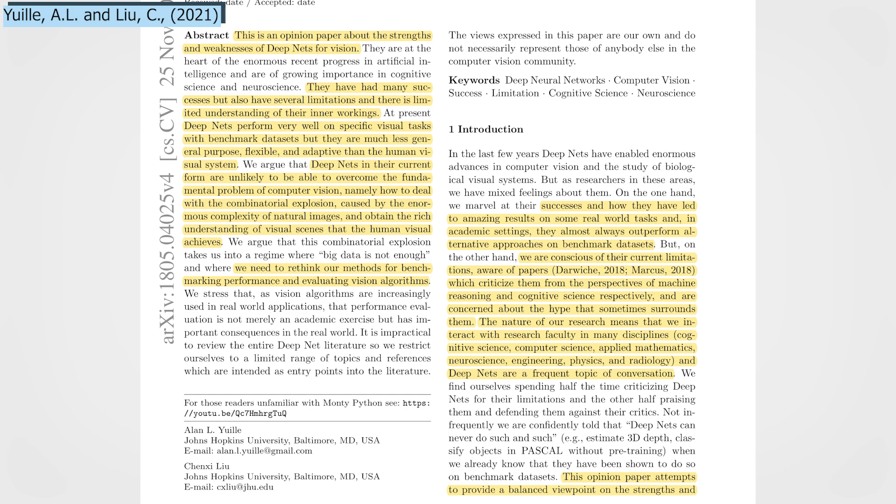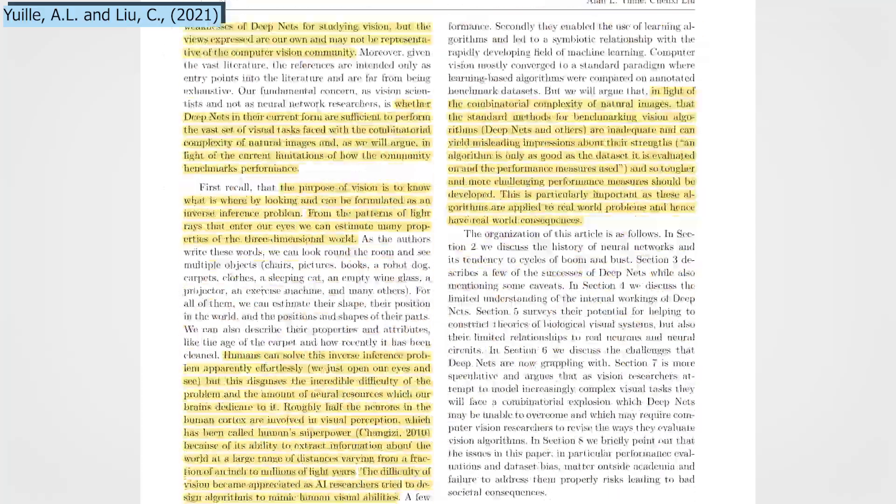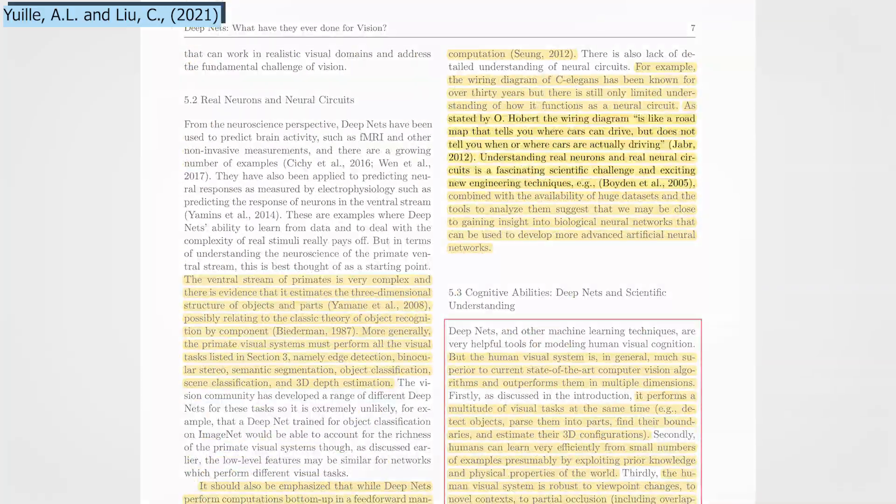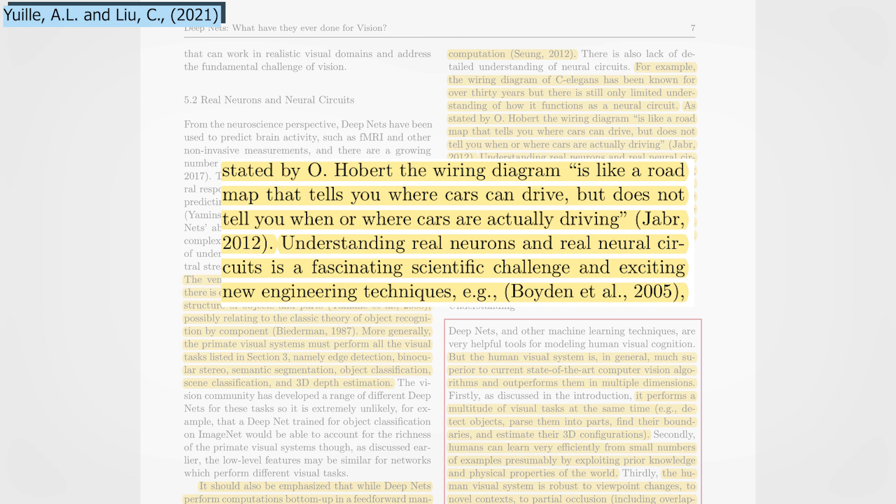We still do not fully understand their inner workings, which makes the use of deep nets even more limited since we cannot maximize their strength and limit weaknesses. As stated by O. Hobart, it's like a roadmap that tells you where cars can drive, but doesn't tell you when or where cars are actually driving.